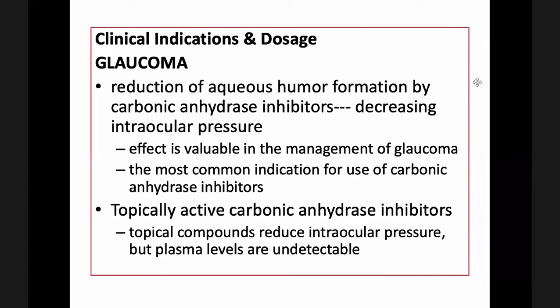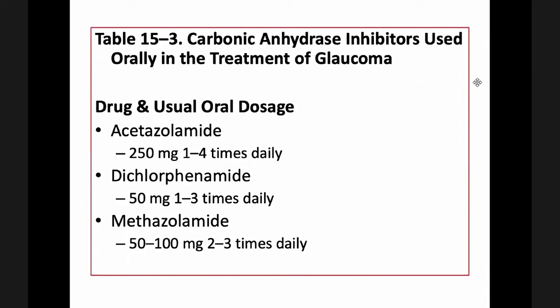Topically active carbonic anhydrase inhibitors are also available, and these compounds can reduce intraocular pressure although plasma levels are undetectable. Some of the carbonic anhydrase inhibitors orally used for the treatment of glaucoma include acetazolamide, dichlorophenamide, and methazolamide, each with corresponding dosages.